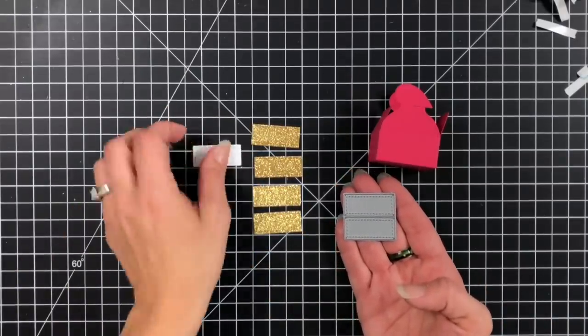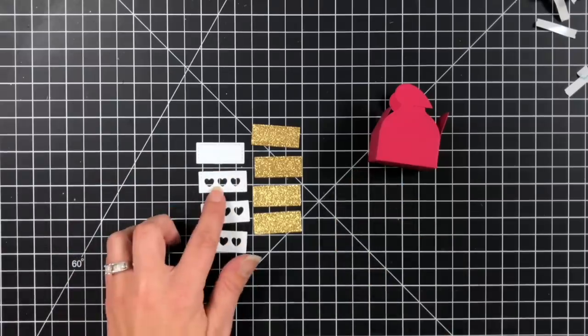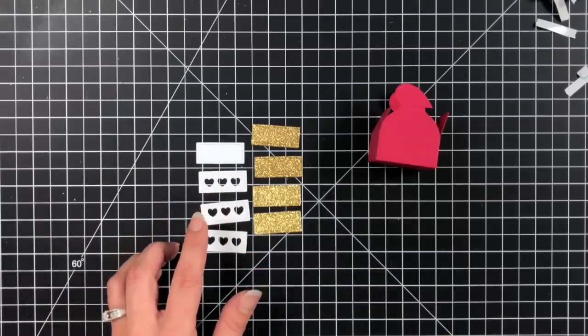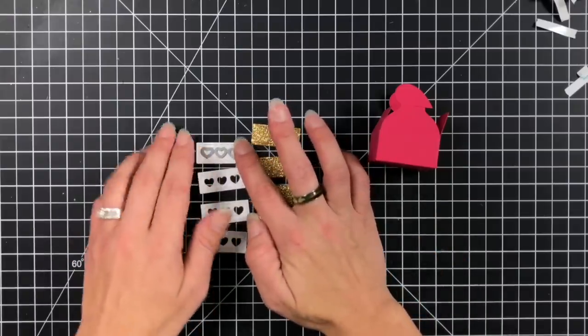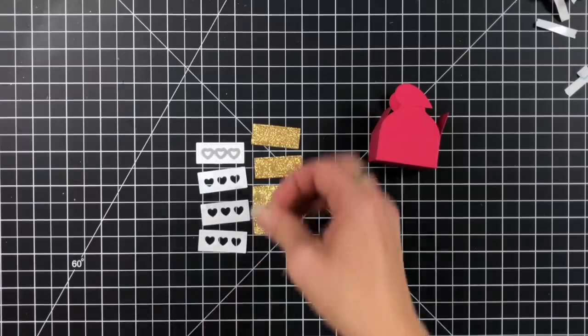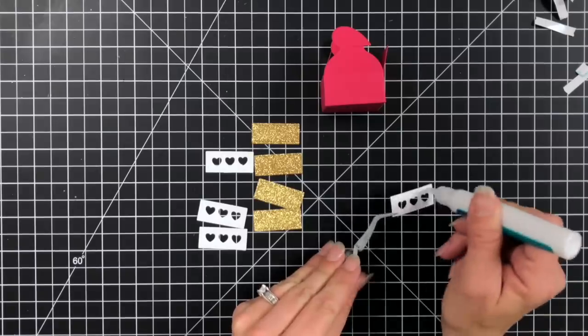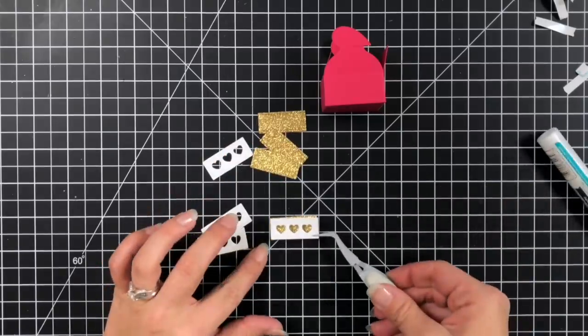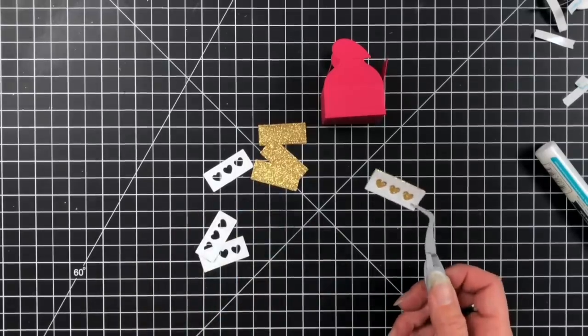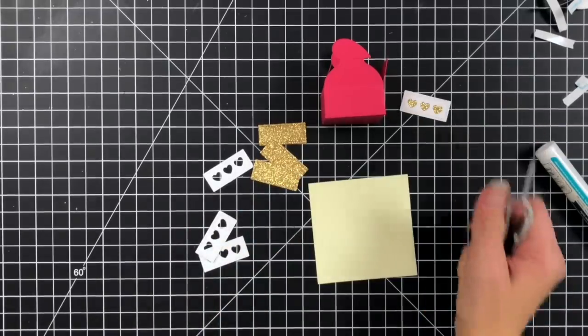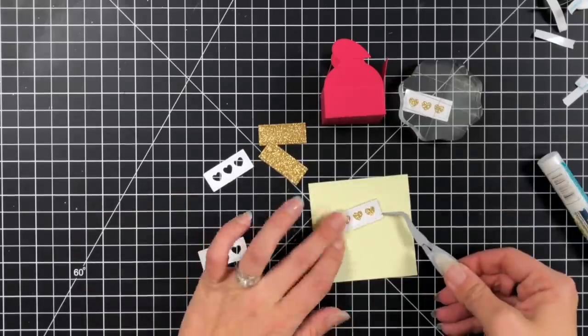Now I'm taking this die piece which is also in the heart treat box die. I die cut it four times out of the gold glitter cardstock and four times out of white cardstock. Then I took these hearts and I just added that to the white cardstock panel, held that down with post-it tape, and I ran that through the die cut machine so that when you see through the hearts it's going to be the gold cardstock that's showing through.